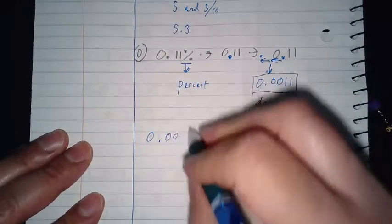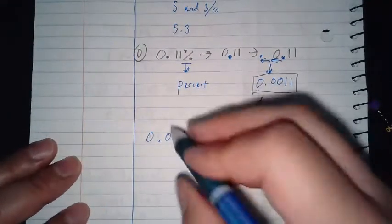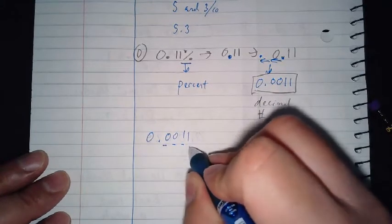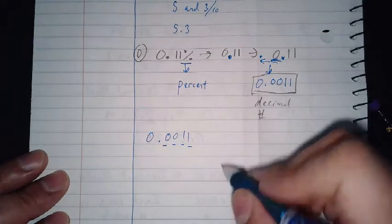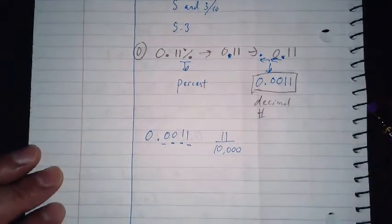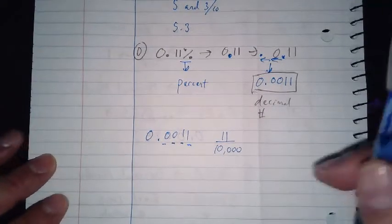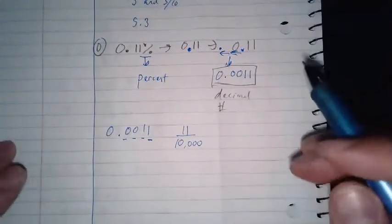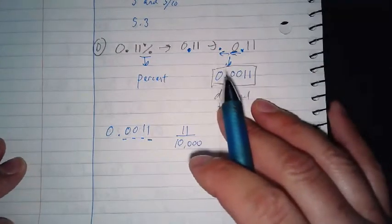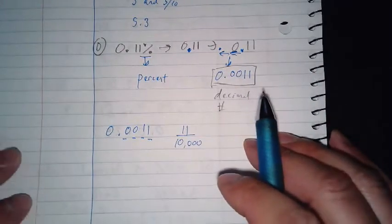But how do you change this to a fraction? You have zero point zero zero eleven. What's the place value? That's ten-thousandths. So we have eleven ten-thousandths, and there's your fraction. You can't simplify this, so you're done. This is going from percentage to decimals and fractions.